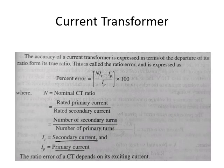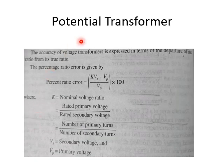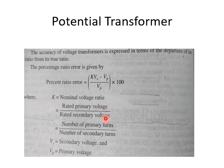The voltage transformer reduces voltage to a lower value and isolates the relay from the high voltage of the system. The accuracy of the voltage transformer is expressed as percentage ratio error = (K × VS − VP) / VP × 100, where VS is the secondary voltage, VP is the primary voltage, and K is the nominal voltage ratio (rated primary voltage divided by rated secondary voltage, or number of primary turns divided by number of secondary turns).